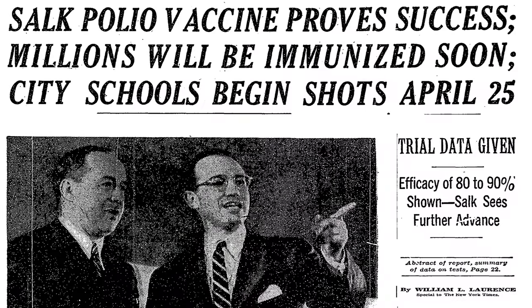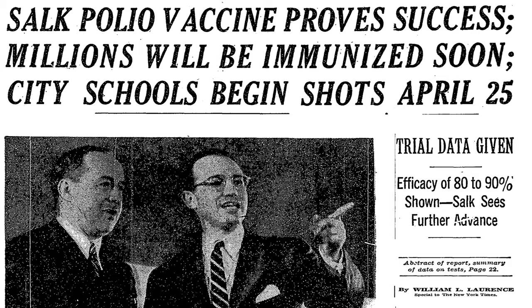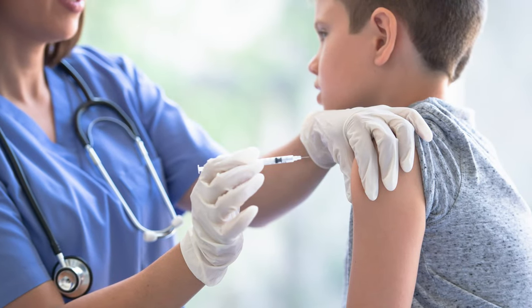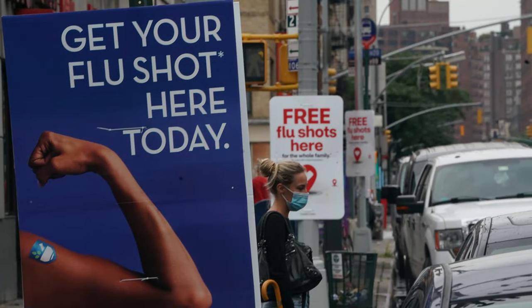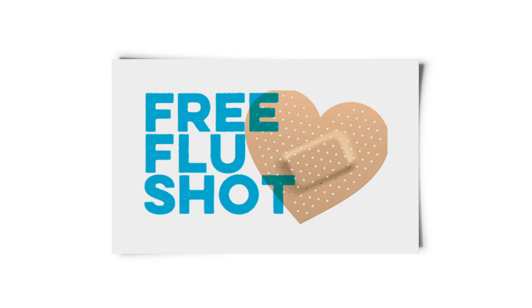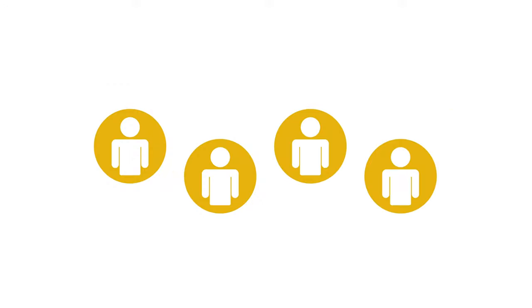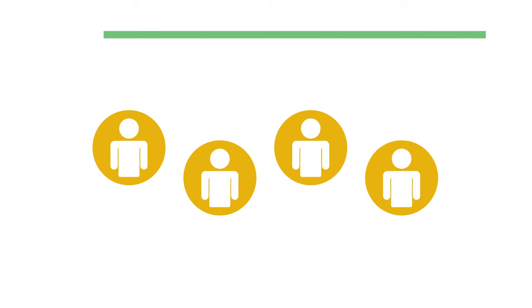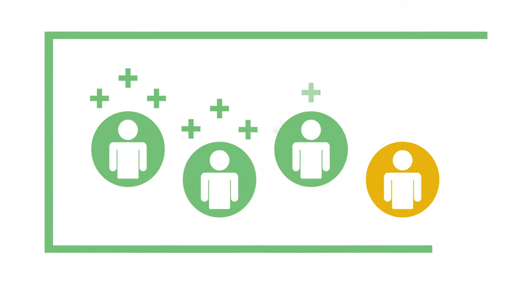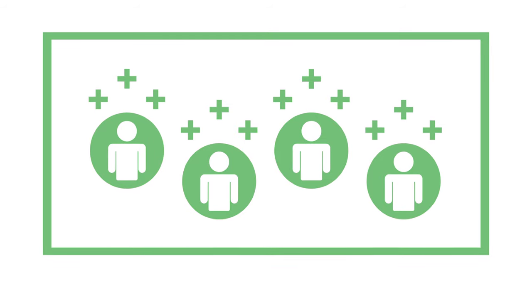We deal with the external benefits of vaccinations in a variety of ways. In some cases, such as polio, we require schoolchildren to be vaccinated by law. In other cases, we offer incentives — we subsidize vaccines to keep the price low. And it's not just government policy: some firms will offer their workers free flu shots. That's an interesting case where the employer internalizes some of the positive externalities from vaccination.